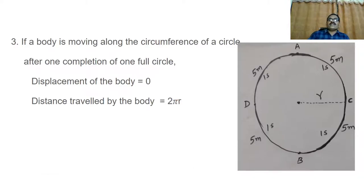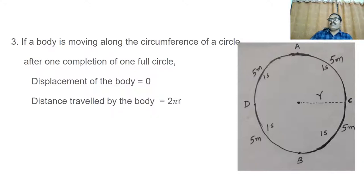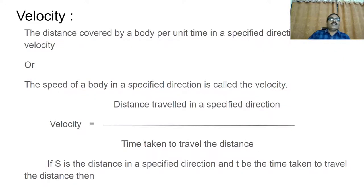By these three examples, we understand one important thing: displacement may be 0, but distance can never be 0. That is, displacement may become 0, but distance cannot become 0. That is the key distinction here.